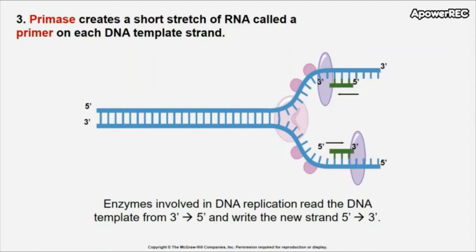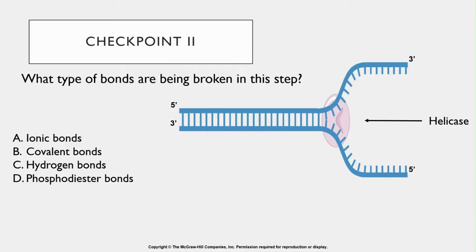Now that we have our RNA primer, we're ready to continue synthesizing DNA. Checkpoint two: what type of bonds are being broken in this step?